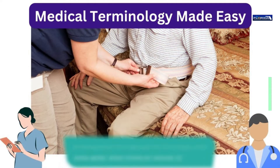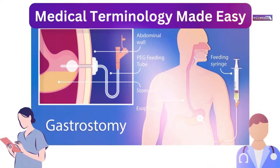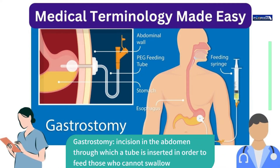Gait belt: belt used to assist in ambulation, walking, or transferring. Gastrostomy: incision in the abdomen through which a tube is inserted in order to feed those who cannot swallow.